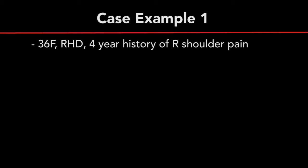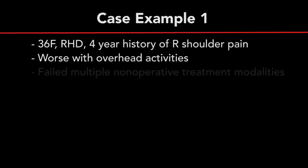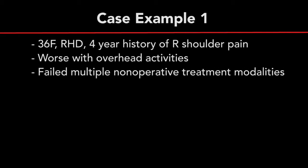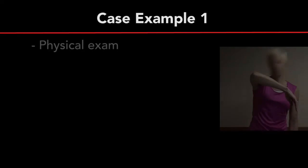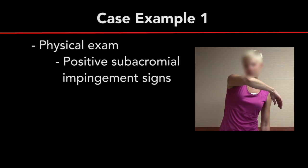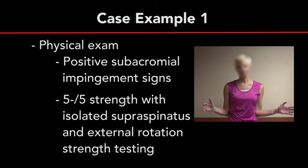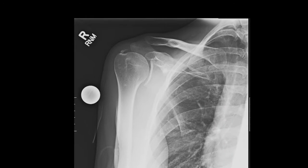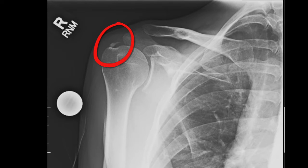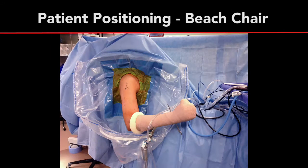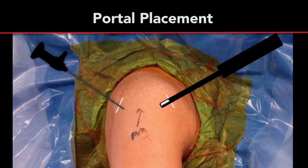Case 1 is a 36-year-old right-hand dominant healthy female, a participant in triathlons and a former javelin thrower, who presents with a four-year history of insidious onset right shoulder pain, worse with overhead activities. She has tried and failed multiple non-operative treatment modalities, including activity modification, anti-inflammatories, and corticosteroid and PRP injections. Physical examination was notable for positive subacromial impingement signs and 5 minus out of 5 strength with isolated supraspinatus and external rotation strength testing. The AP radiograph demonstrates evidence of well-defined calcium deposits just proximal to the greater tuberosity, suggestive of calcific tendinitis. The patient was placed in the beach chair position for a right shoulder arthroscopic excision of calcific tendinitis with rotator cuff debridement versus repair.